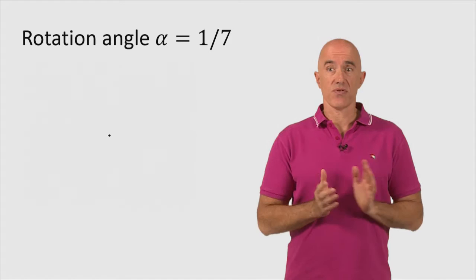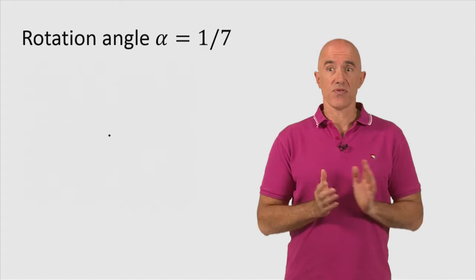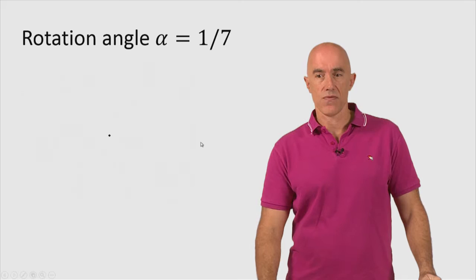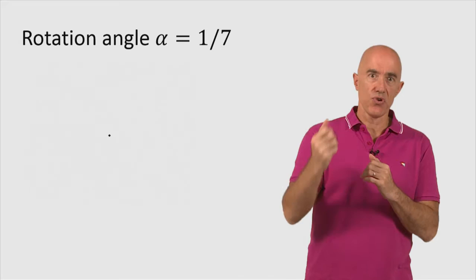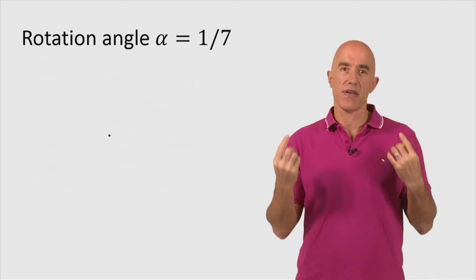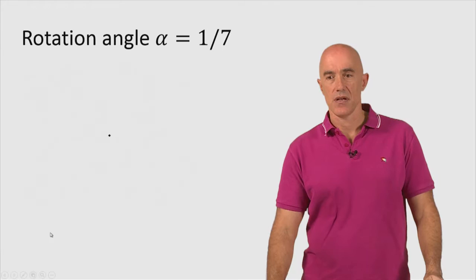So let's see how this will work. What happens if alpha is one-seventh? So think about the model. So we're moving out radially. We're rotating one-seventh of the circle for each new floret that gets created. So if you like, you can pause the video and think what the model is going to look like. So here we go. We can run the model.